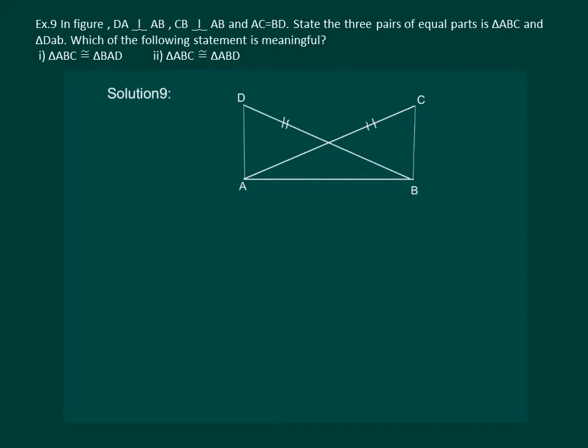Firstly let us note that in triangle ABD angle A is 90 degrees and in triangle BAC angle B is 90 degrees.